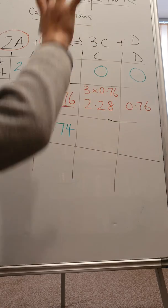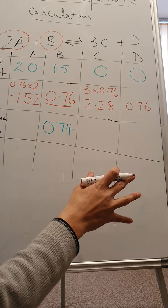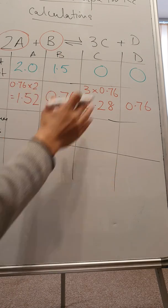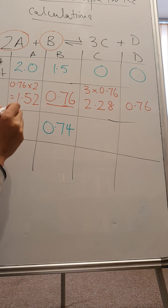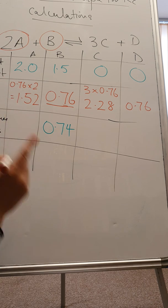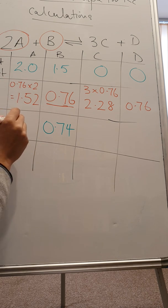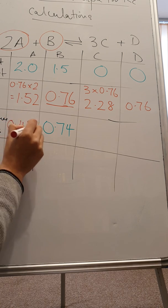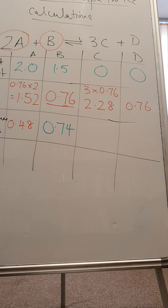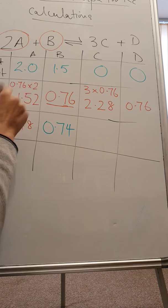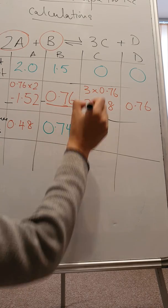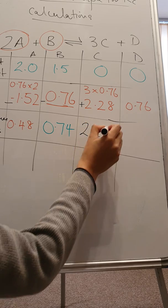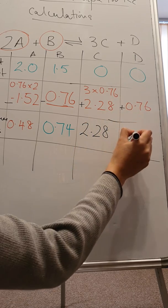Whatever's on the right hand side, the products, that's going to increase. Whatever's on the left hand side, that's going to decrease. So the amount of A remaining at equilibrium is 2 minus 1.52, which is 0.48. So I'm going to put a minus sign there, minus sign there, and a plus sign there, and a plus sign there.